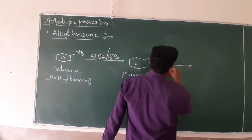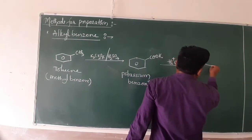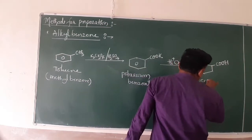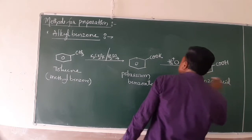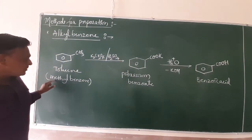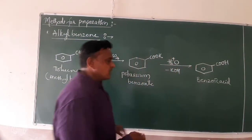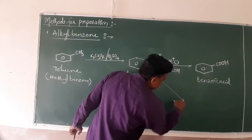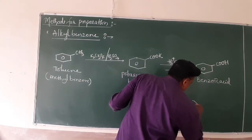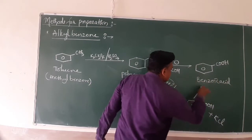Potassium benzoate then undergoes acid hydrolysis using H3O⁺ or H2O under acidic conditions. The product formed is benzoic acid. Combined with this, KOH is also released. This is the simplest method: methylbenzene undergoes oxidation to form potassium benzoate, which is followed by acid hydrolysis to form benzoic acid. If treated with hydrochloric acid instead, the product is also benzoic acid, with KCl as the byproduct.